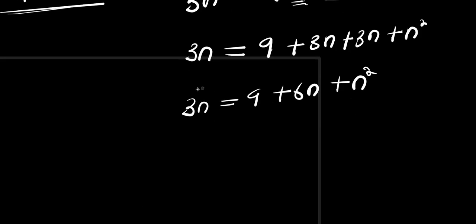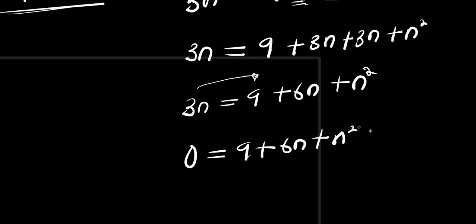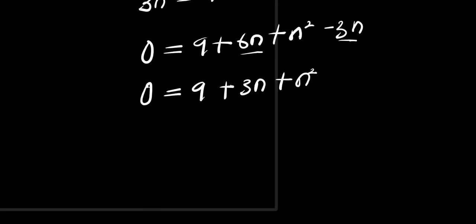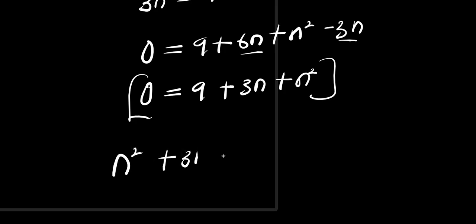We move 3n over to get 0 equals 9 plus 6n plus n² minus 3n, so 0 equals n² plus 3n plus 9. Rearranging the quadratic equation starting with n squared, we have n² plus 3n plus 9 equals 0.